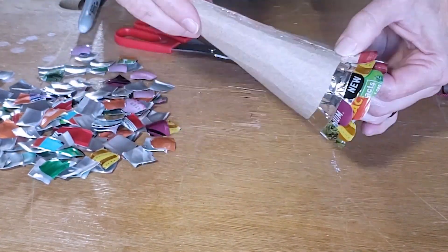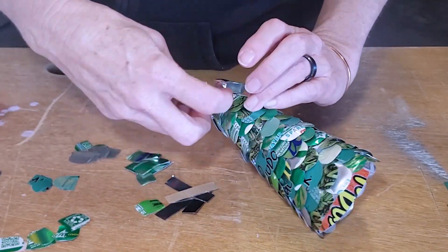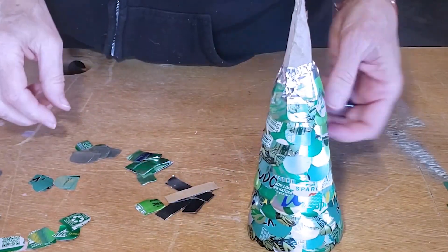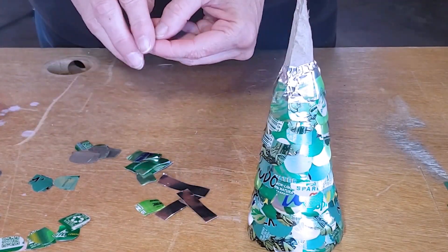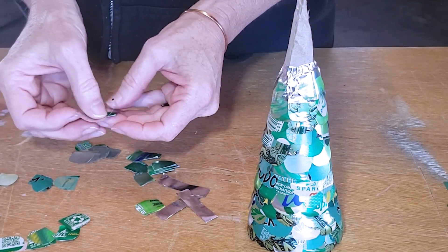I started this project thinking that I could use all the different colors of scrap pieces but once I got a couple of rows onto the cone I decided it looked way too much like a party hat so I did switch to only green pieces and I had to cut up some of my aluminum sheets so that I would have enough green.